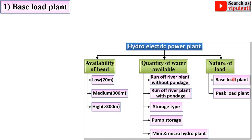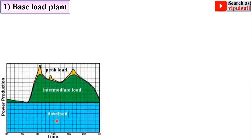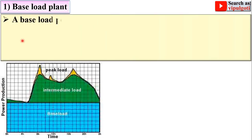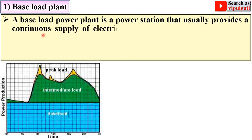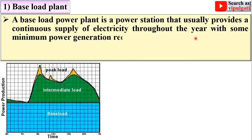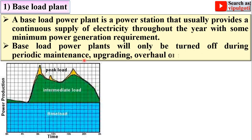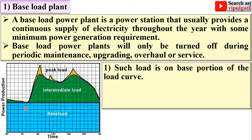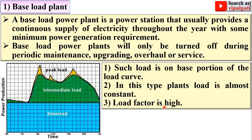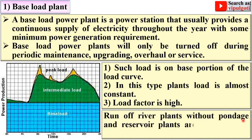The last classification is according to the nature of load. The first type is the base load plant — a power station that provides a continuous supply of electricity throughout the year with some minimum power generation requirements. Base load plants will only be turned off during periodic maintenance, upgrading, overhaul, or service. The load is on the base portion of the load curve, load is almost constant, and load factor is high. Runoff river plants without pondage and reservoir plants are used as base load plants.